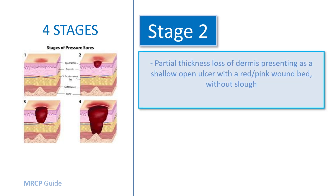In stage 2, there is partial thickness loss of dermis presenting as a shallow open ulcer with red or pink wound bed without slough. Or it may present as an intact or ruptured serosanguinous blister.